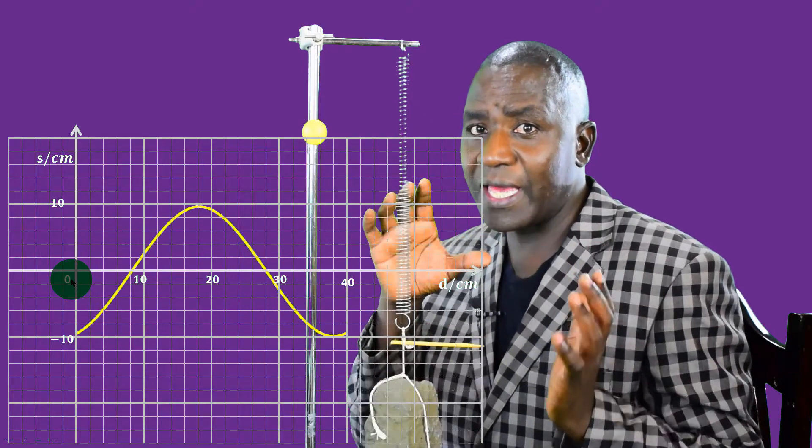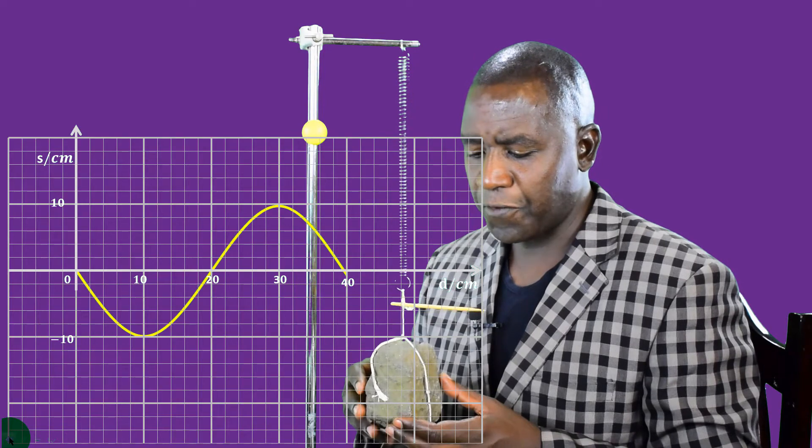So it oscillates between minus 10 and positive 10, 0 being the equilibrium position. Now, there are two points that I'd like you to note. We could start this oscillation from this point here. We could start this oscillation from equilibrium position, in that particular position there.